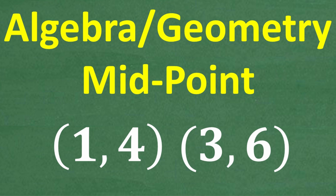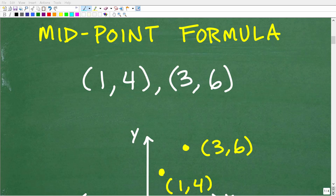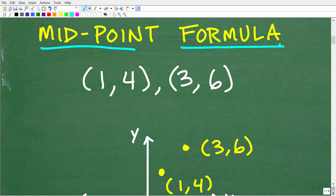So one more time, we have two points — XY ordered pairs. One is 1,4 and the other is 3,6. We're trying to find the midpoint between these two points. The goal of this video is to make sure you understand what the midpoint is, what the midpoint formula is, and how to use it.